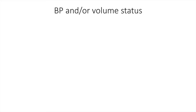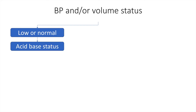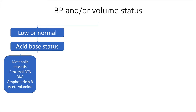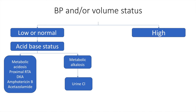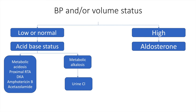If the patient's blood pressure and volume status is low or normal, we again look at the patient's acid-base status. If the patient is acidotic, we can arrive at the conclusions of proximal renal tubular acidosis, diabetic ketoacidosis, or drugs like amphotericin B and acetazolamide. If the patient is alkalotic, we consider a urine chloride. To recap: we have reached this point after establishing a TTKG greater than 4 and a 24-hour urine potassium greater than 15 millimoles per liter.